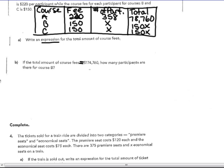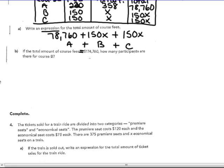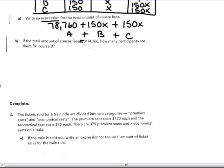So course A, I know that value. It's $78,760. Course B and C are 150X whatever the fee is. So that's the expression. No equal sign. It says write an expression for the total. A plus B, plus C. So here's the expression above there. $78,760 plus 150X plus 150X. If the total amount for the course fees is $174,760, how many participants are there in course B? Now I'm going to solve for X.